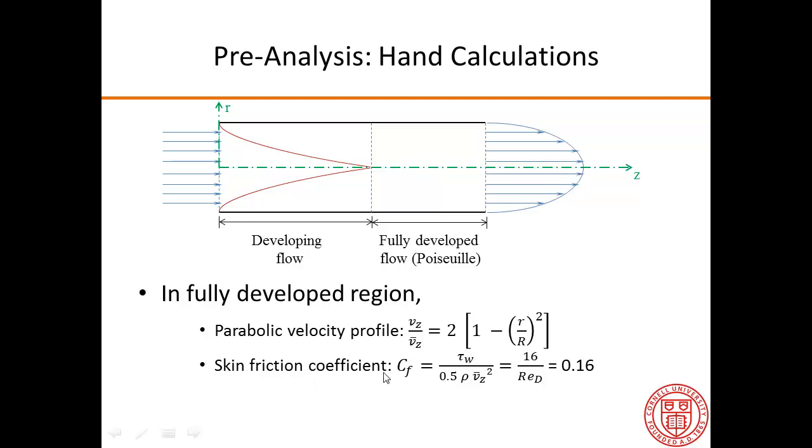We can also calculate what the skin friction coefficient is, and that's going to be 16 divided by the Reynolds number based on the diameter, and that's 0.16 in our case, since the Reynolds number is 100.